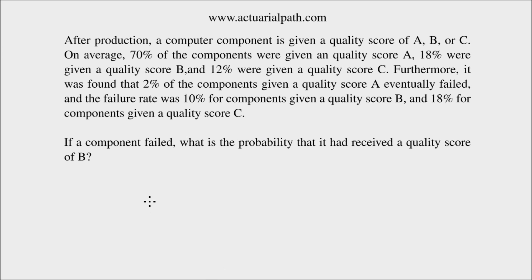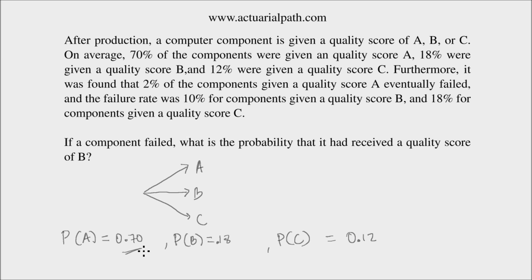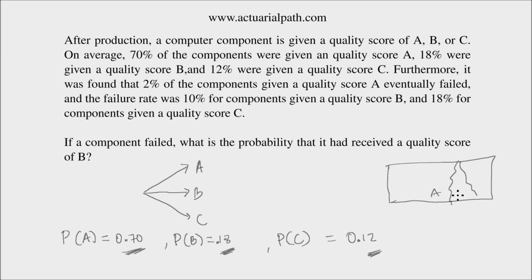We have three different quality scores that could be given to a component: a score of A, a score of B, or a score of C. The probability of A is 70%, the probability of B is 18% or 0.18, and the probability of C is 12% or 0.12. Since 70% plus 18% plus 12% adds up to 1, A, B, and C form a partition of the sample space.